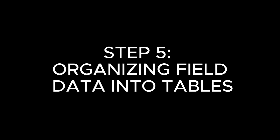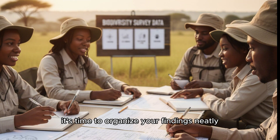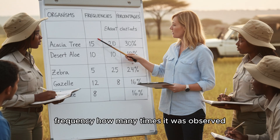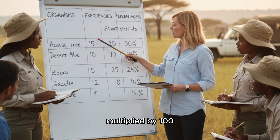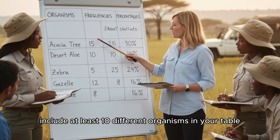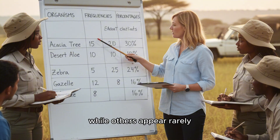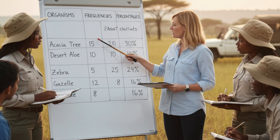Step 5: Organizing Field Data into Tables. After the fieldwork, it's time to organize your findings neatly. Create a table with clear columns such as name of organism, whether plant or animal, frequency — how many times it was observed — and percentage occurrence, which is the frequency divided by total observations, multiplied by 100. Ensure to include at least 10 different organisms in your table for proper analysis. You may notice that some species are very common while others appear rarely — this is normal and shows natural variation in distribution. This table will become the foundation for your graphs and later interpretations.